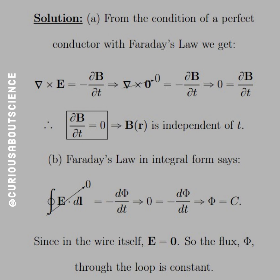All right, let's chug along. Part A: From the condition of the perfect conductor with Faraday's law, we get that the curl of E equals negative ∂B/∂t. But the curl of 0 is 0, so we see that ∂B/∂t equals 0.